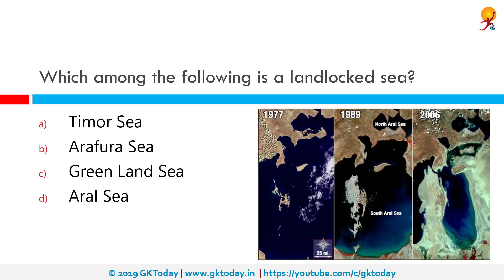Which among the following is a landlocked sea? The correct answer is the Aral Sea. The Aral Sea was an endorheic lake lying between Kazakhstan in the north and Uzbekistan in the south. The name roughly translates as 'Sea of Islands,' referring to over 1,100 islands that dotted its waters. In Turkic, 'Aral' means island or archipelago.